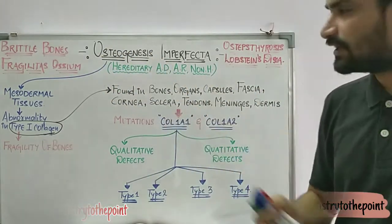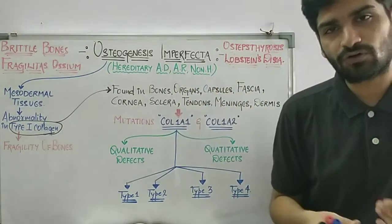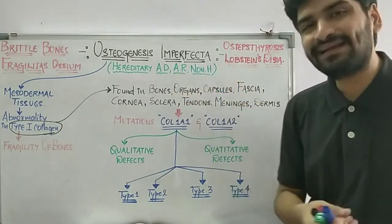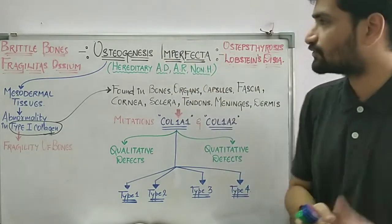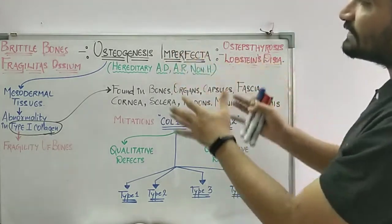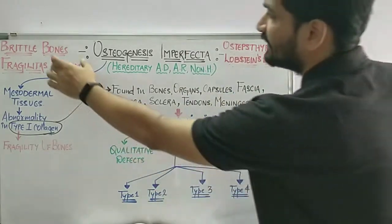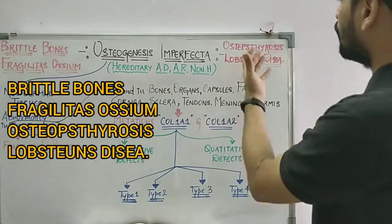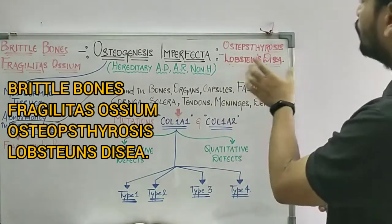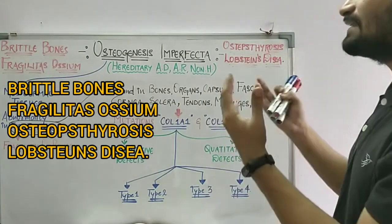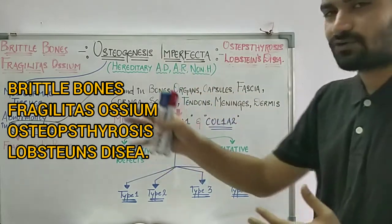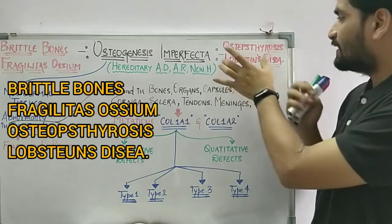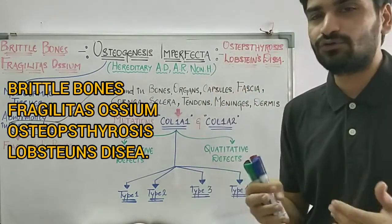— autosomal dominant, or it can also present as autosomal recessive. Sometimes non-hereditary forms of osteogenesis imperfecta are also seen. There are various other names like brittle bone disease, fragilitas osseum, osteopsathyrosis, and Lobstein's disease. You need to remember these other names, as short notes or fill-in-the-blank questions can be asked about Lobstein's disease.